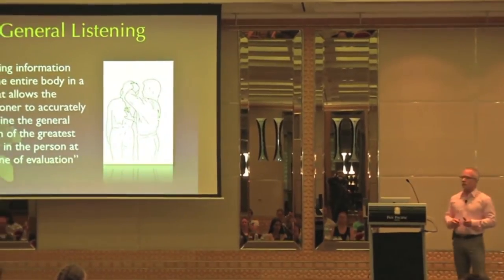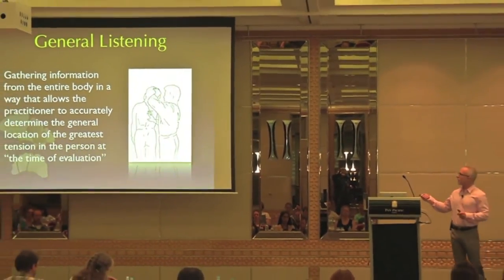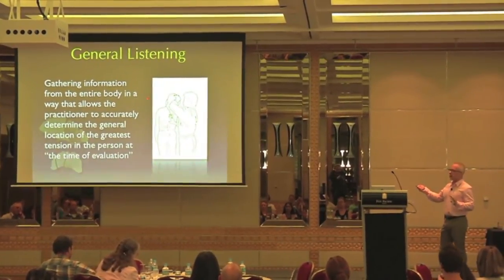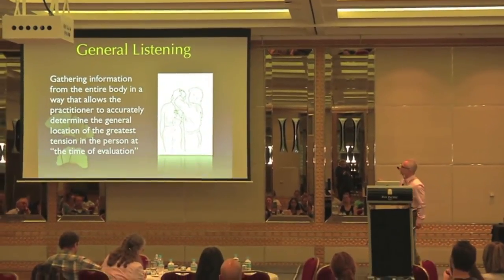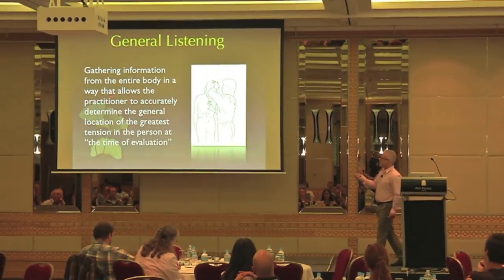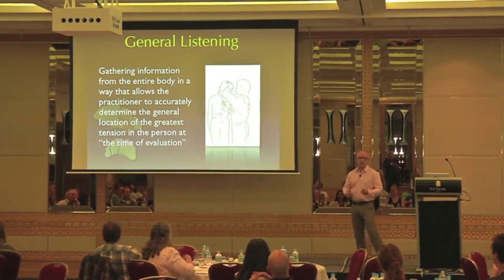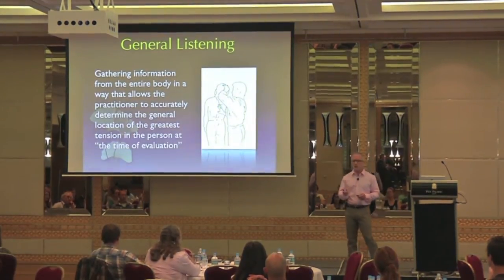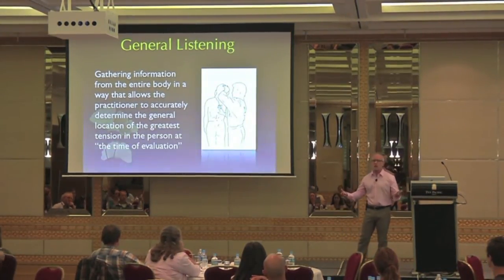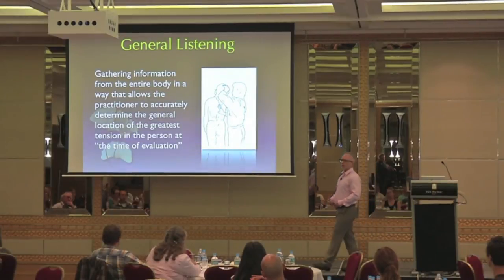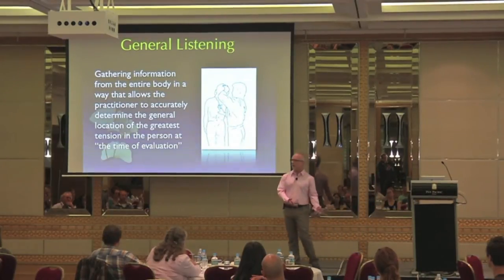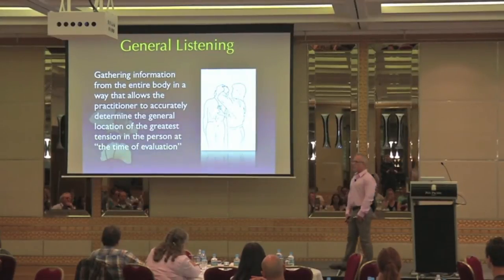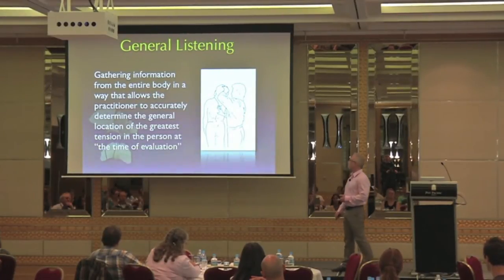General listening is a means of evaluating the body by gathering. It's a placement of the hand on top of the head. You're evaluating the entire body for its general tensions. You're not getting the specificity of where the restriction is actually occurring, but you're getting the overall general pattern — is it coming from the right, the left, the abdomen, the thorax, the lower extremities? You can get that from this type of evaluation.